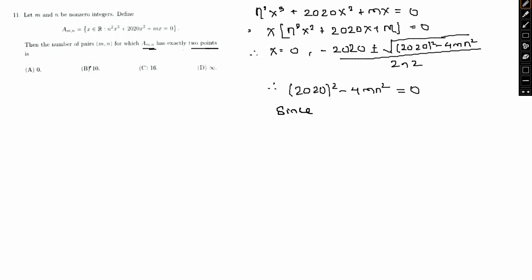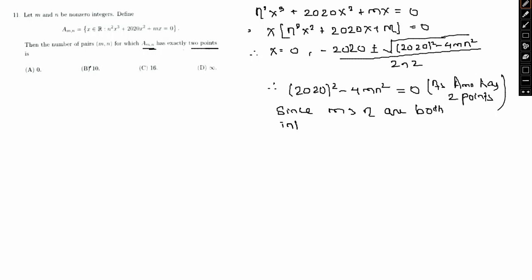Since m and n are both non-zero integers, we need the discriminant to be zero, which means n² must be a perfect square — which it already is since n is an integer.